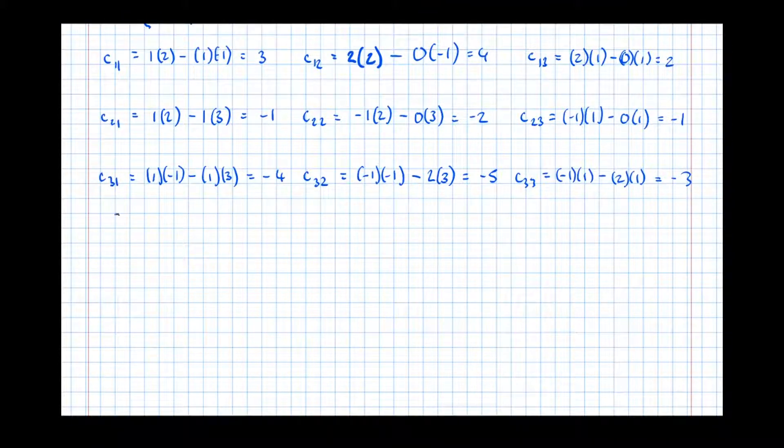C₂,₃ equals, so cover up that row and column, we get -1 times 1, take away 0 times 1, which is equal to -1. And C₃,₃ equals -1 times 1, take 2 times 1, which gives -3. So we're almost there. The matrix of cofactors, so we put each of the numbers we've just found into a matrix in the corresponding places. So we get 3, -1, -4, 4, -2, -5, and 2, -1, -3.